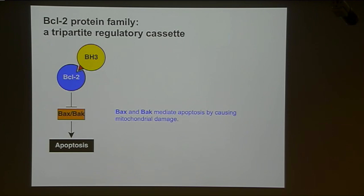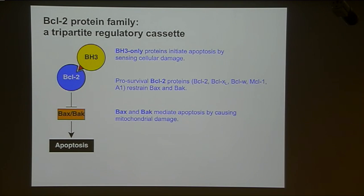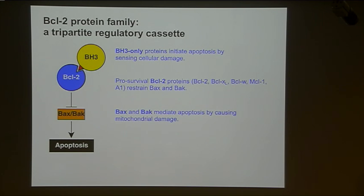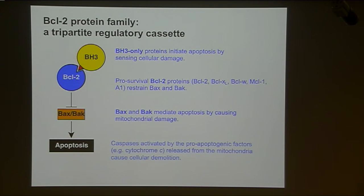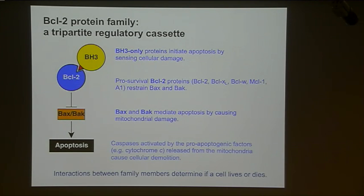Normally BAX and BAK are present in pretty high amounts in cells, but they're restrained by the pro-survival proteins, including BCL2, BCL-XL, and MCL1. In turn, these proteins are regulated by BH3-only proteins, which act principally as sensors of the pathway. Once they're activated by damage signals, they take out the activity of the pro-survival proteins to allow BAX and BAK to become activated and cause mitochondrial damage. The consequence is leakage of toxic factors from within the mitochondria into the cytosol, such as cytochrome C, which leads to activation of enzymes called caspases that mediate cellular demolition.